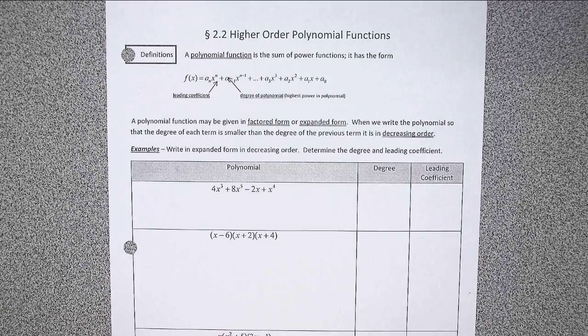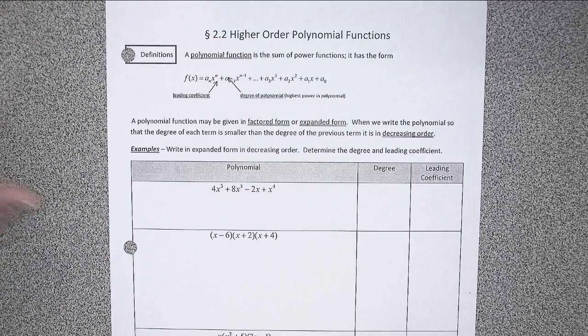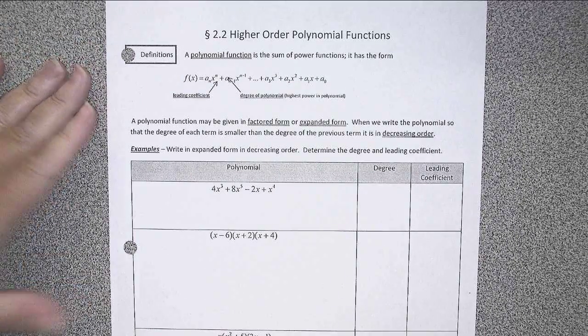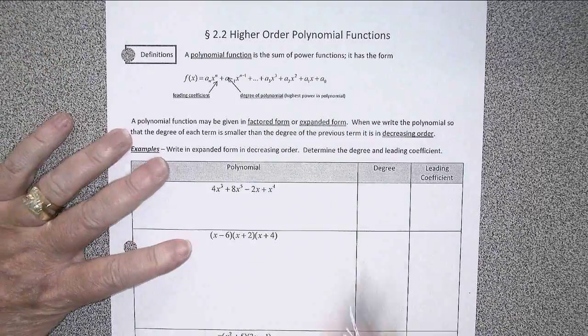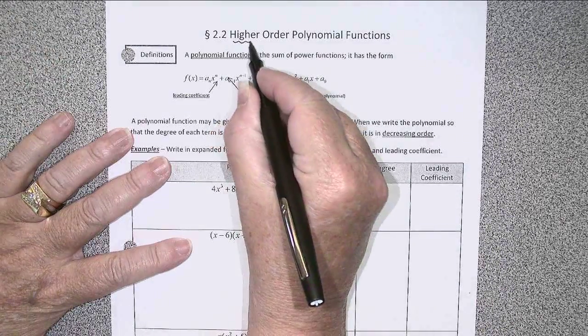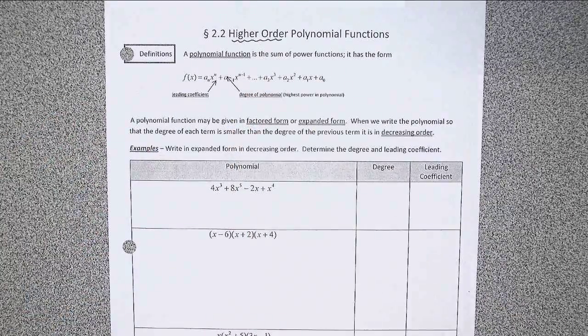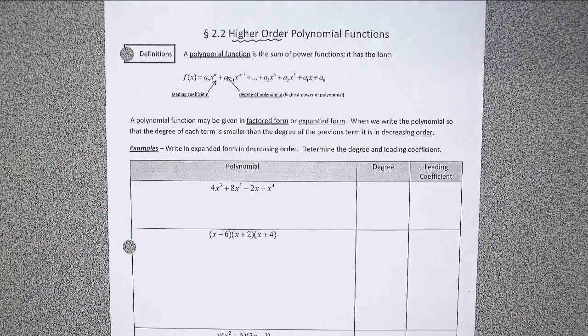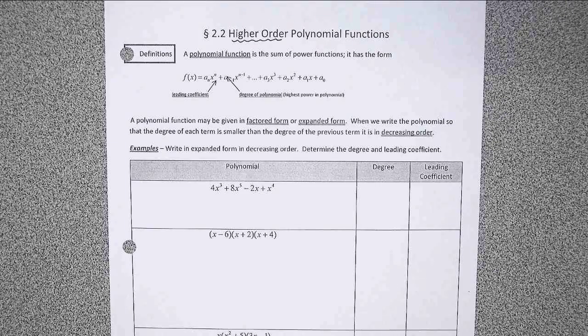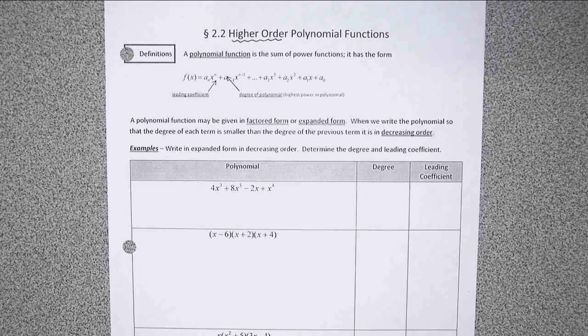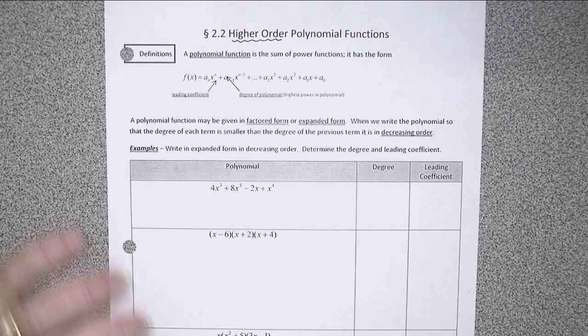This is Math 139, Section 2.2. We're going to be working with the algebra of simplifying higher-order polynomial functions. When we refer to higher-order, we just mean something with a larger power than 1, which would be a linear function, or 2, which would be a quadratic. So in this section, we'll look at things with degrees higher than 2.